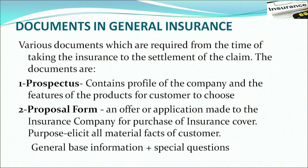Let us now understand what documents are required in general insurance. There are various documents required for the settlement of claims. The first is the prospectus, which is a primary document containing the profile of the company — its name, operations, branch locations, head office, how long it has existed, and the various products it offers.